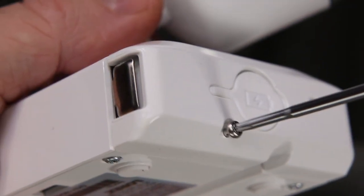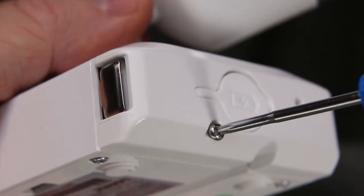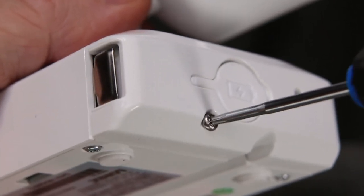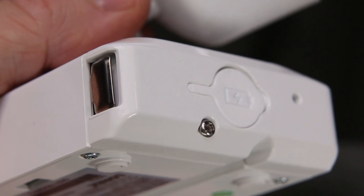For additional protection, Lorex has added a Torx set screw to keep the battery firmly in place. Simply tighten with the included Torx wrench.